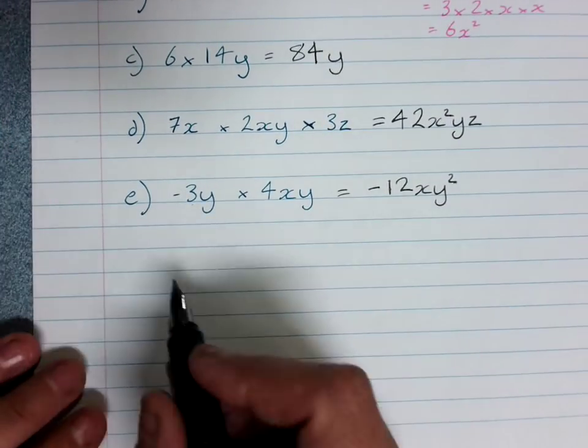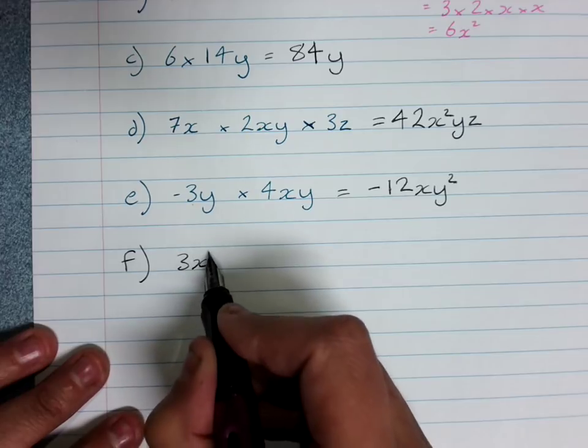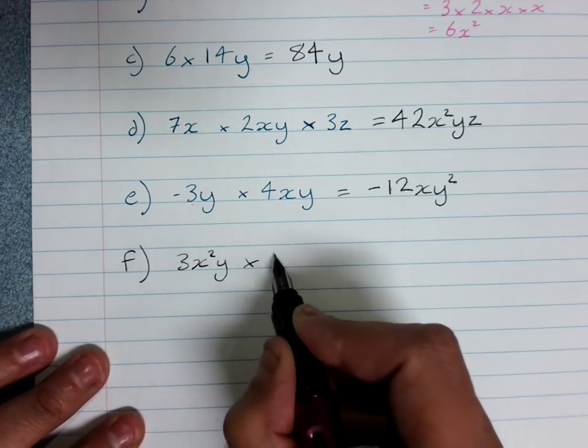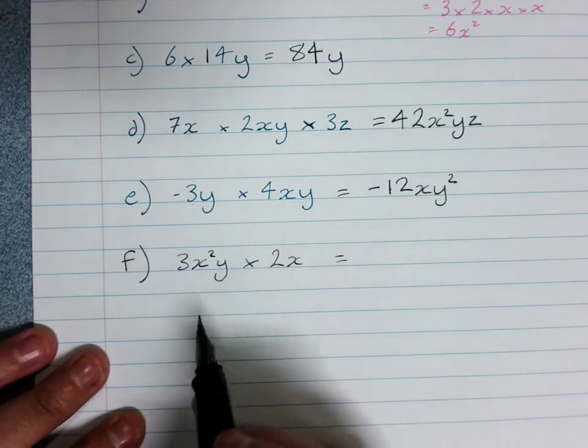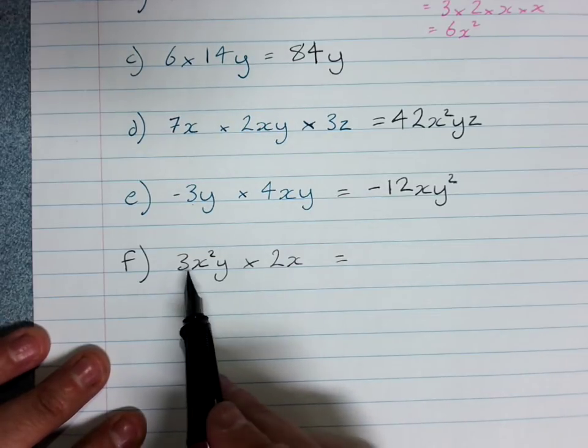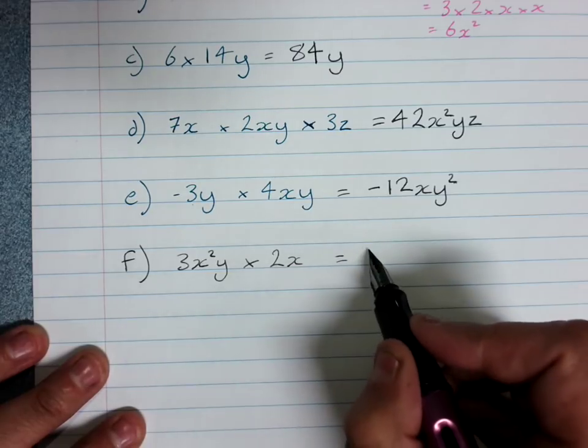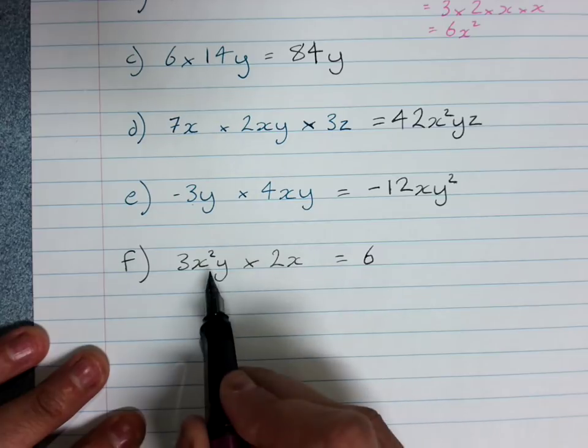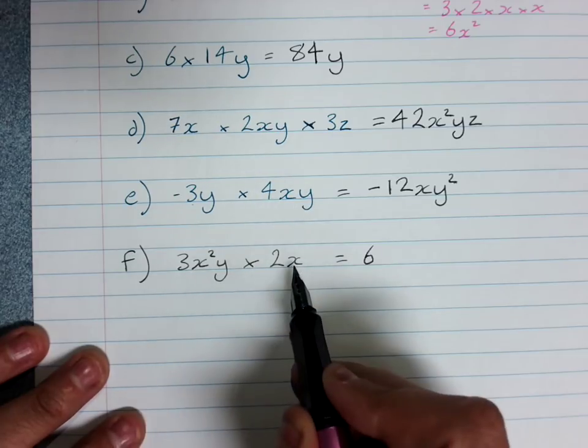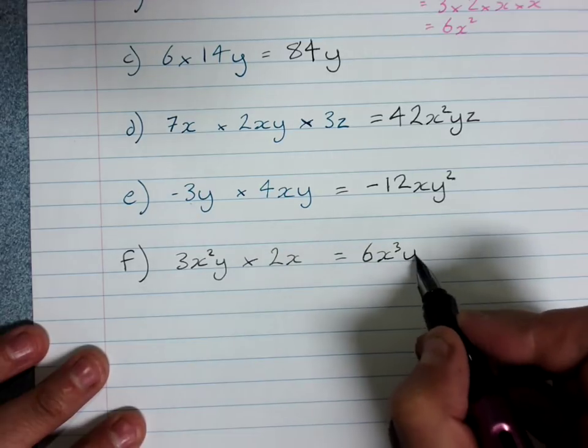Now I'll just write a very quick little extra question with some powers in it. We still follow our rule, multiplying our coefficients: 3 times 2 is 6. Now x squared times x, that would mean x times x times x, so that will be x cubed times y.